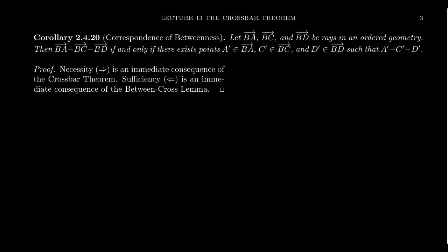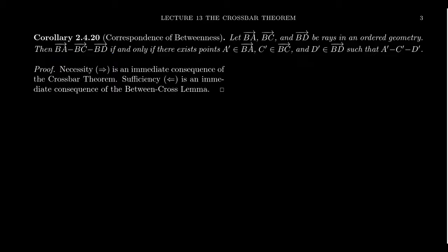In our previous video for lecture 13, we defined the notion of what it means for two rays to be between one another. We also proved the crossbar theorem. An immediate corollary of the crossbar theorem is this idea of correspondence of betweenness. We have two notions of betweenness playing out right now, and it turns out they are really related to each other.